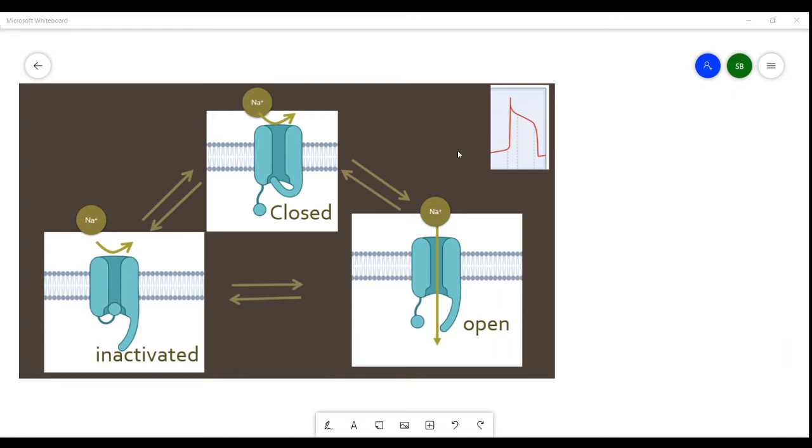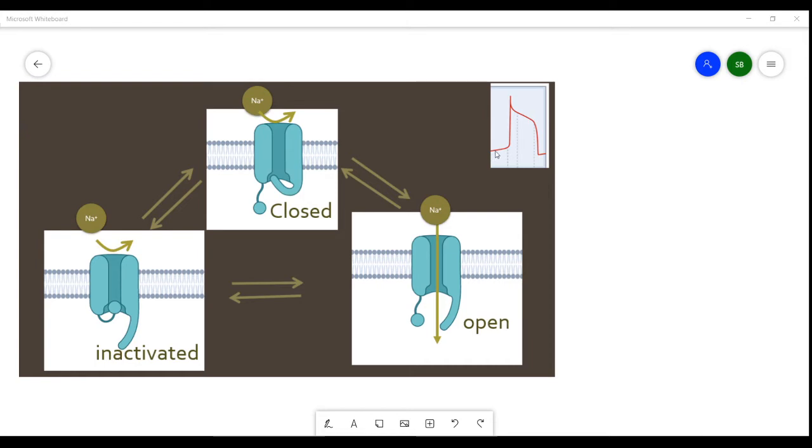Remember that the sodium channel at depolarized membrane potentials starts off in the closed state. The sodium channel has two gates. There's the usual gate that you expect to see in a voltage-gated channel.